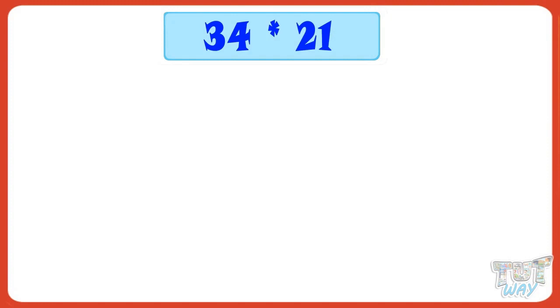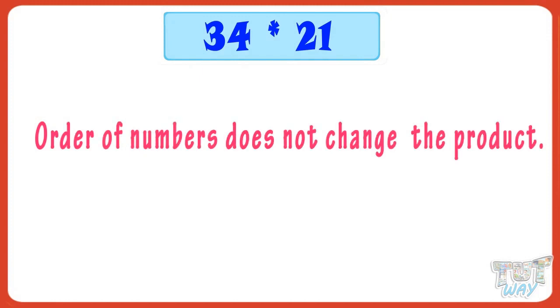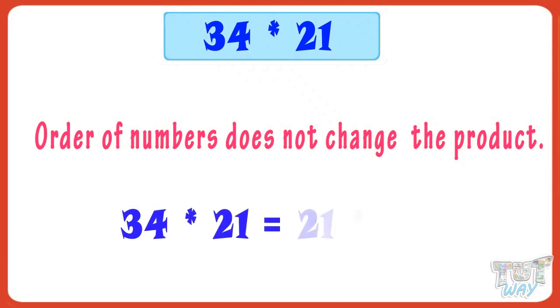So let's get started. We will multiply 34 multiplied by 21. Remember, order of numbers does not change the product — that is, 34 multiplied by 21 equals 21 multiplied by 34.